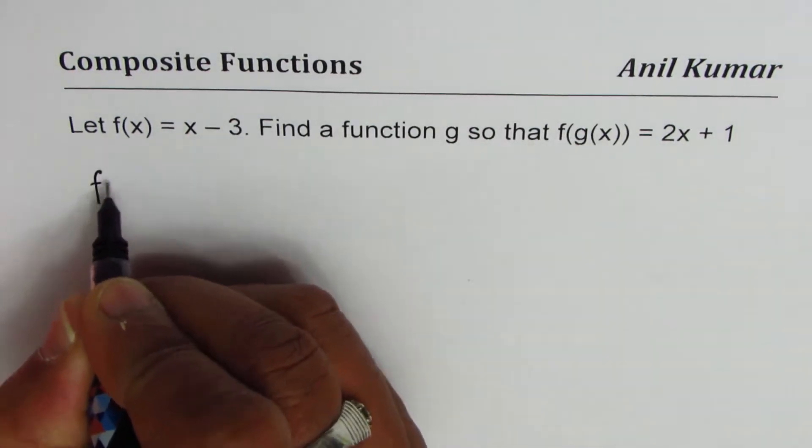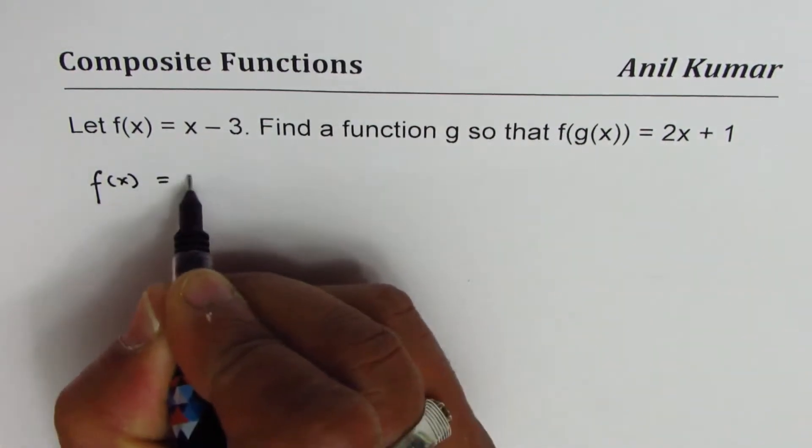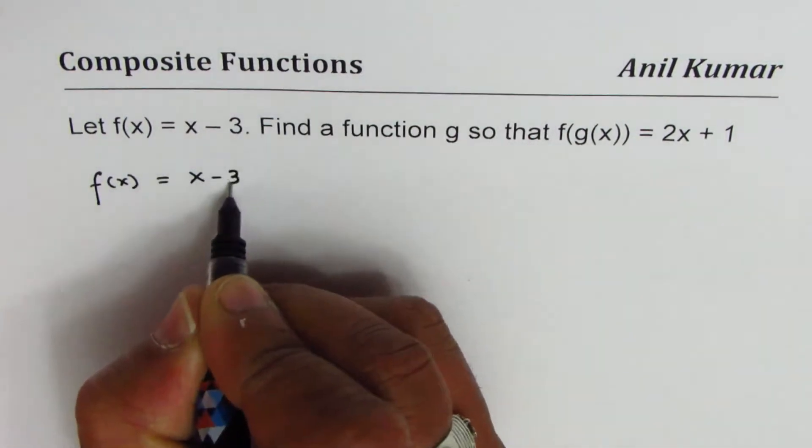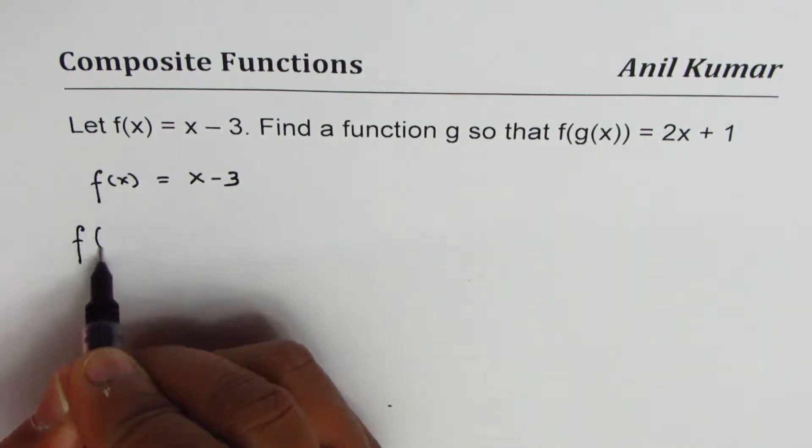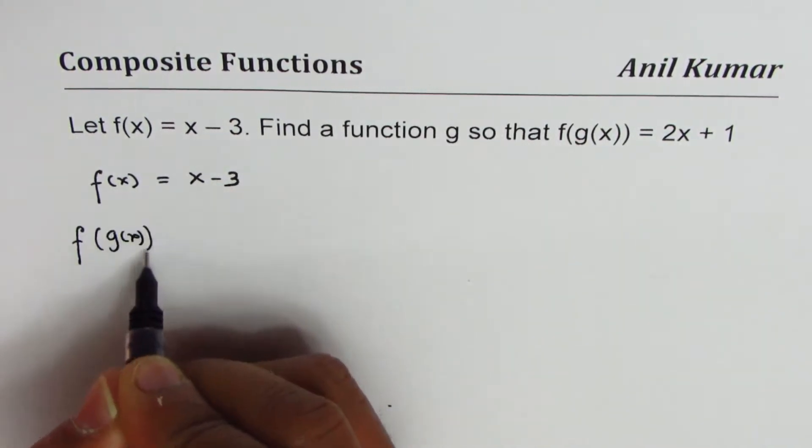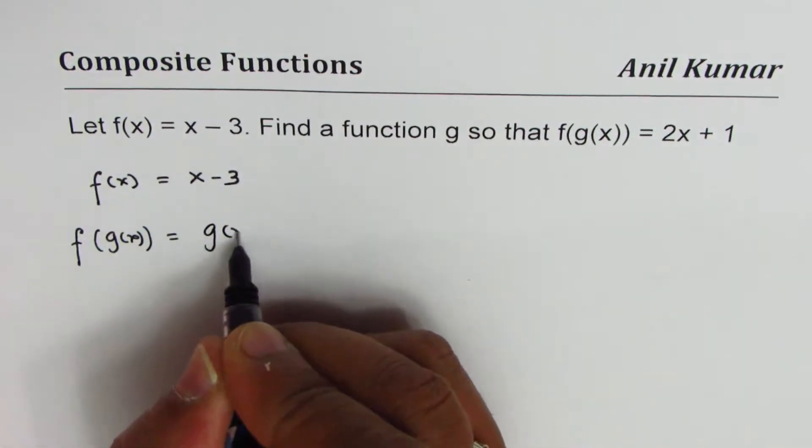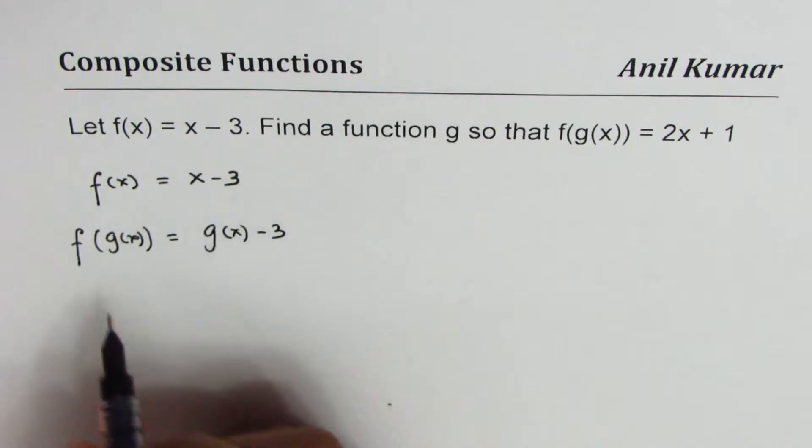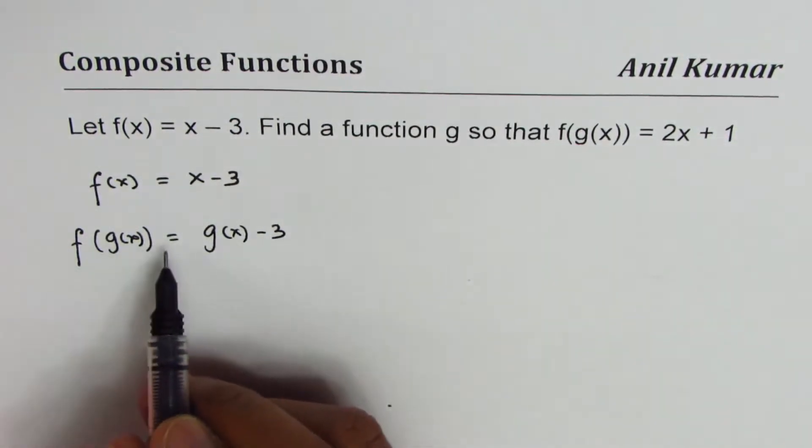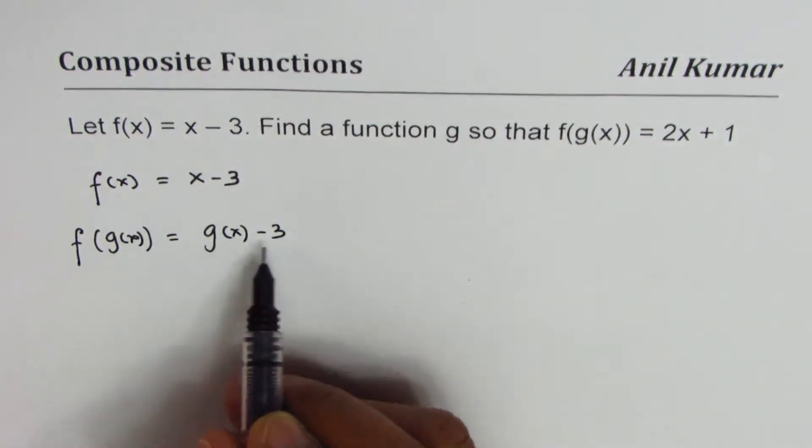What we're given here is that f(x) = x - 3. Now from here, what should be f(g(x))? Well, we need to replace x with g(x), right? So we get g(x) - 3. So f(g(x)) should be equal to g(x) - 3.